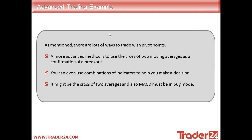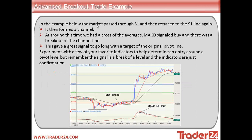For an advanced trading example: a more advanced method is to use the cross of two moving averages as confirmation of a breakout. You can even use combinations of indicators — it might be the cross of two moving averages and also MACD must be in buying mode as well. In this example the market passed through S1 and then retraced to the S1 line again, forming a channel. Around this time we had a cross of the moving averages — two moving averages crossing over — and then a signal from the MACD as well, along with a breakout of the channel line. We use three different indicators here to confirm a buy opportunity, and all three worked in unison quite well.